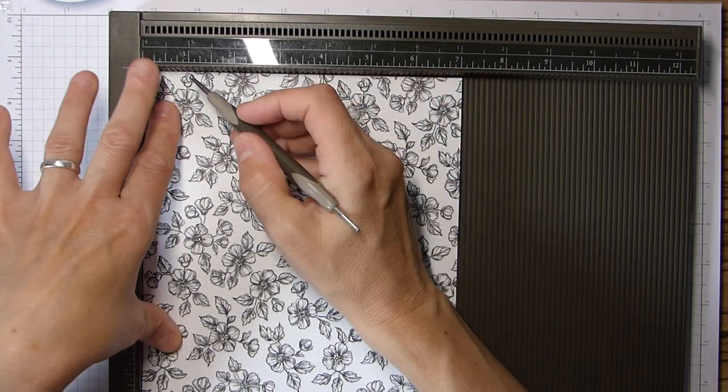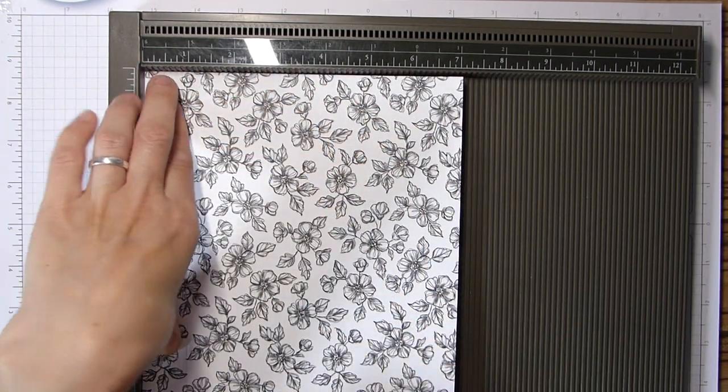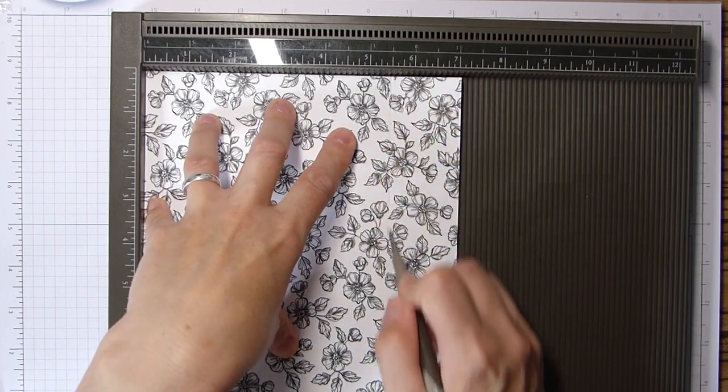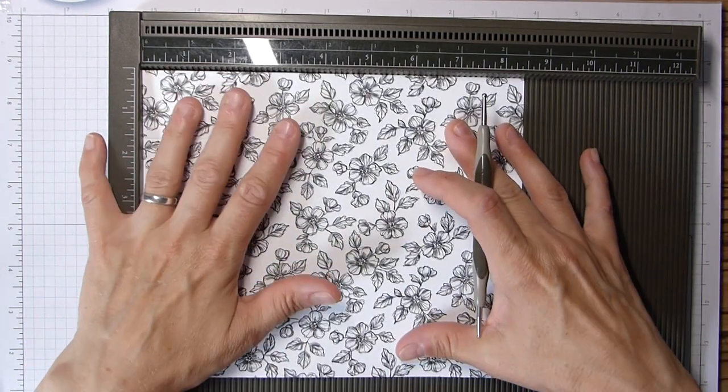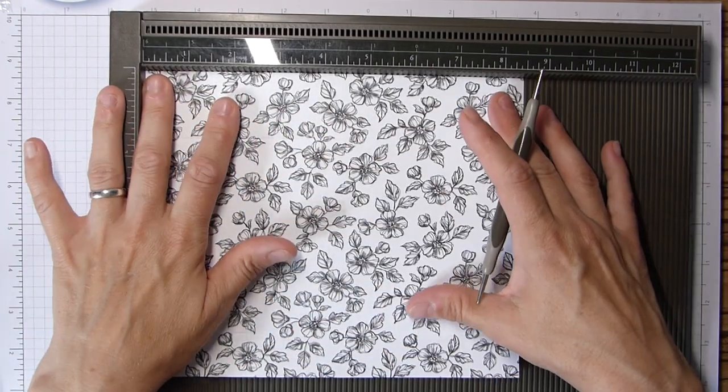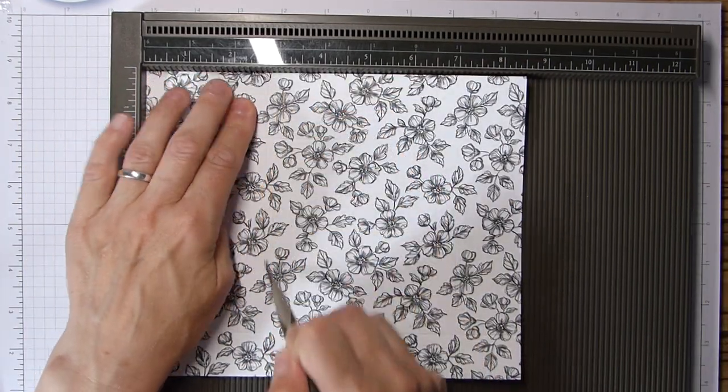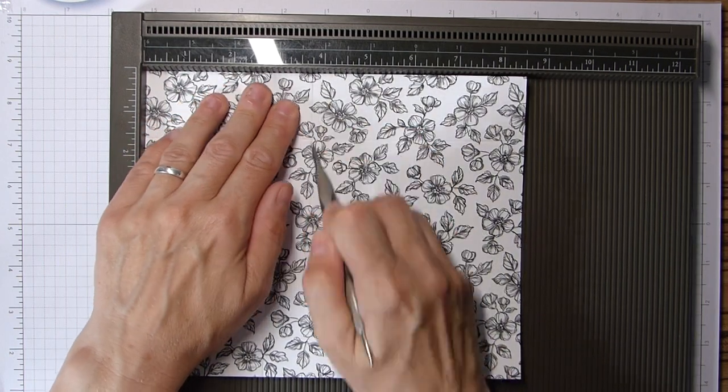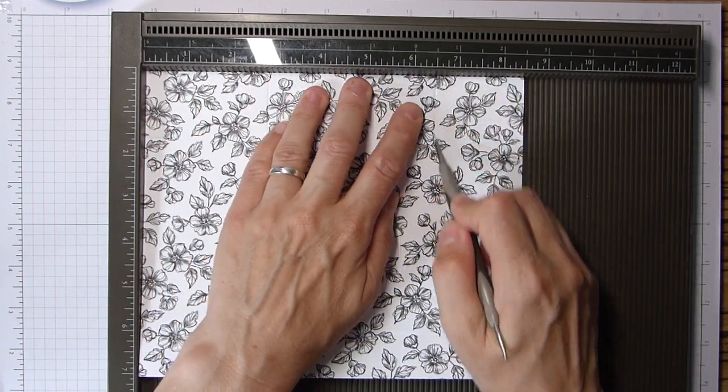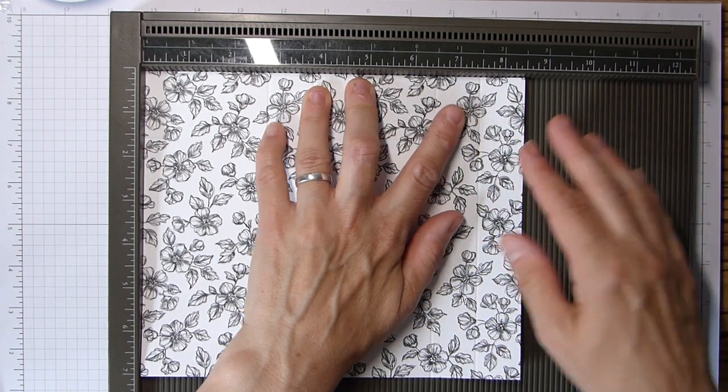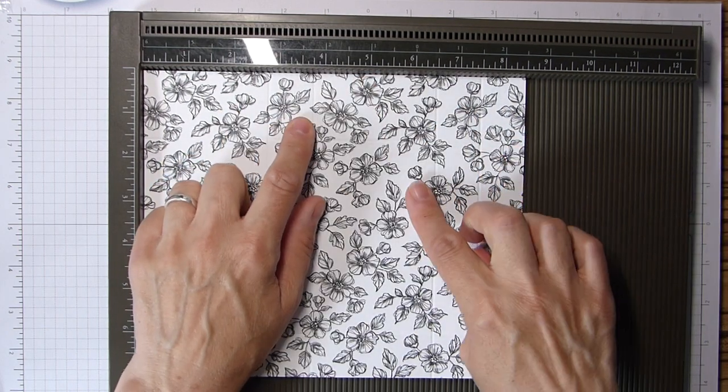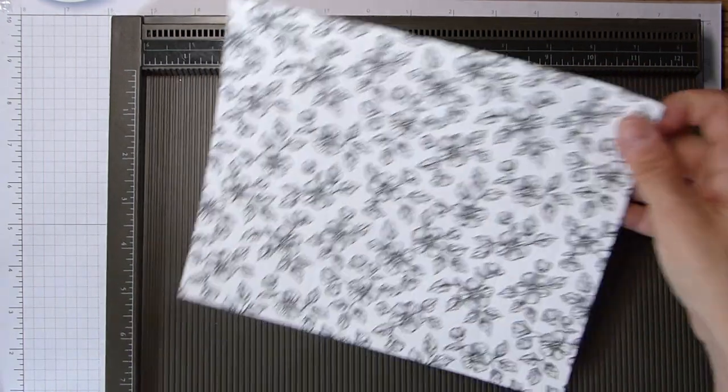Short side, 1 inch and 5.5 inches. That's 2.5 and 14 centimeters. Rotate it anticlockwise and we're going to score on the long side at 2.75, 3.75, 6.5 and 7.5. In centimeters that will be 7, 9.5, 16.5 and 19.